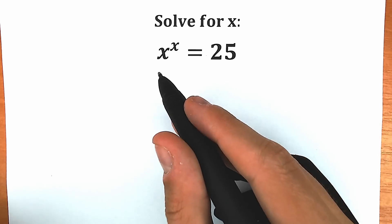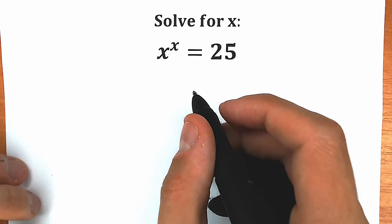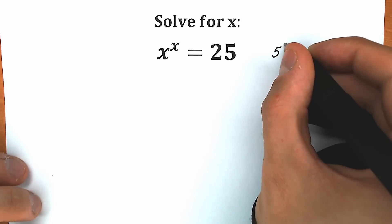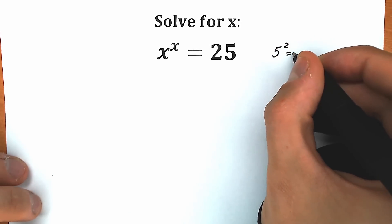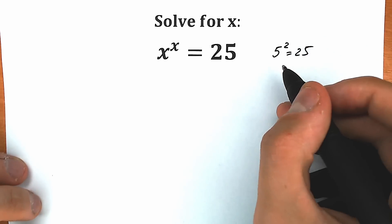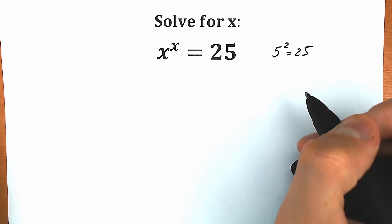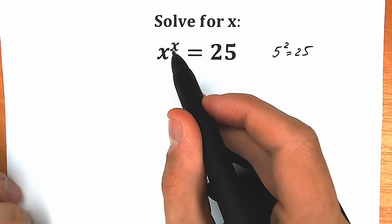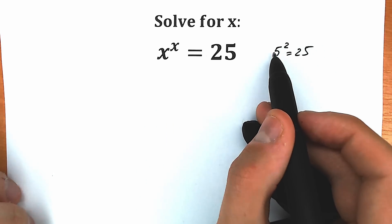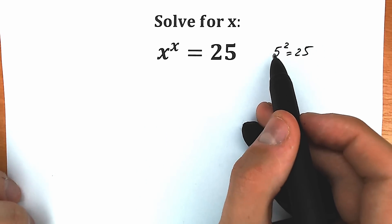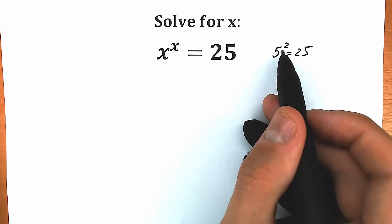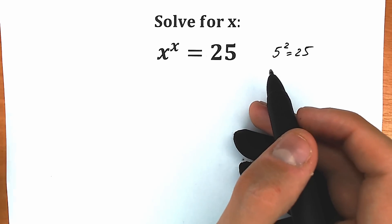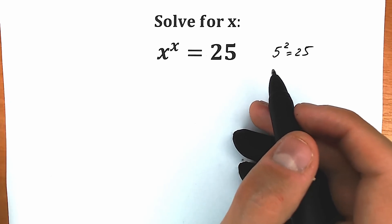So we have x to the x equal to 25, and a lot of students say, okay, 5 squared equals 25. And I say, yes, 5 squared equals 25, everything is great, but if you look closely we have x to the x. So this is not x to the x — this is 5 to the second power. This is a completely different base and completely different power. So the answer is completely different, so let's try to solve it.